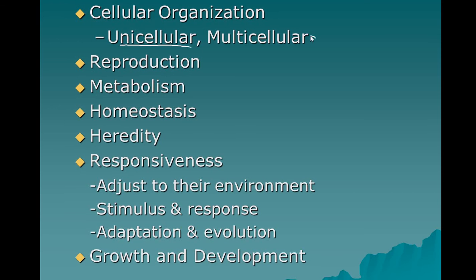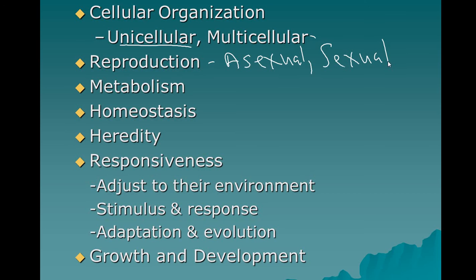For reproduction — what does that mean? Making more? We're going to learn that there's actually asexual reproduction and there's also sexual reproduction. You are doing asexual reproduction right now; it's called mitosis. A unicellular organism can make another copy of itself and it is a clone. But all living things also have a mode of sexual reproduction. Bacteria even have a means of sexual reproduction. Sexual reproduction is an exchange of genes from two sources.